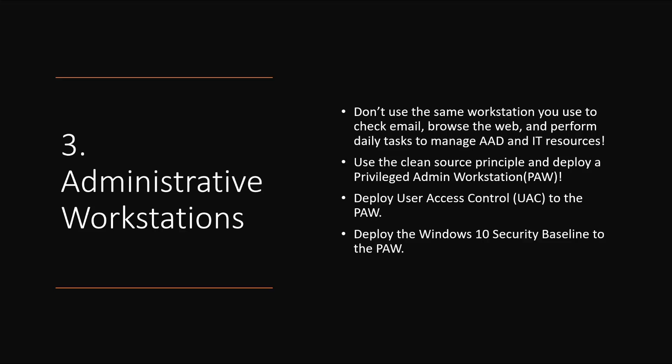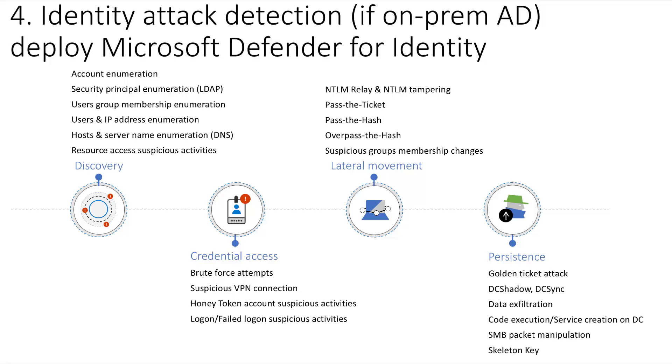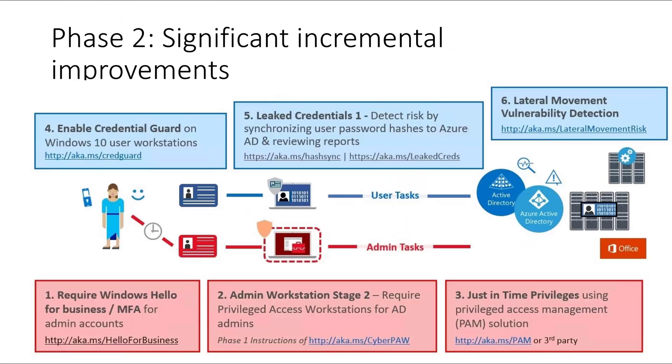Administrative workstations: don't use the same workstation you use to check email and browse the web to do all your administrative tasks. Use a separate workstation. Consider the clean source principle — whatever machine you're using to administer the environment, make sure it's coming from a clean, uncompromised source. That means deploying things like User Access Control and the Windows 10 security baseline. If you still have on-premises Active Directory, deploy Microsoft Defender for Identity, formerly known as Azure Advanced Threat Protection. It monitors on-premises domain controllers and looks for on-prem identity-based attacks like pass-the-hash, account enumeration, golden ticket, DC shadow, and more.